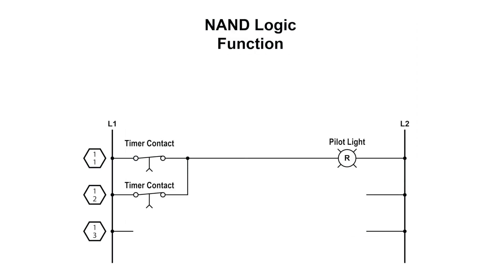The NAND function can come from a combination of the AND and NOT logic function in which two or more normally closed contacts are connected in parallel to control the load. The example shows the NAND logic in which the pilot will go off if both the timing relays are energized and done timing. If either one is not actuated and completed, then the pilot light will stay on.